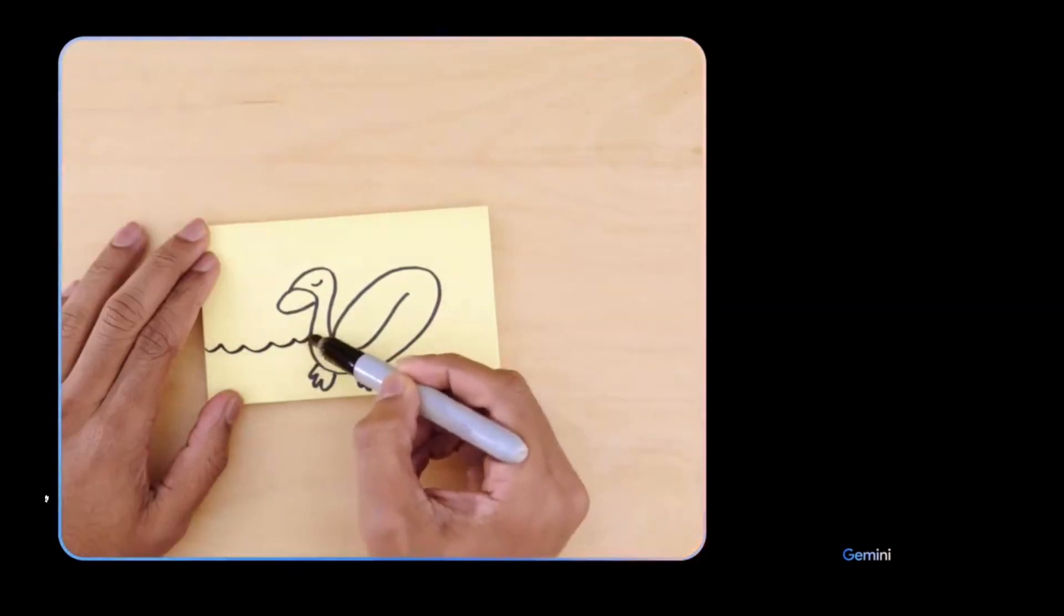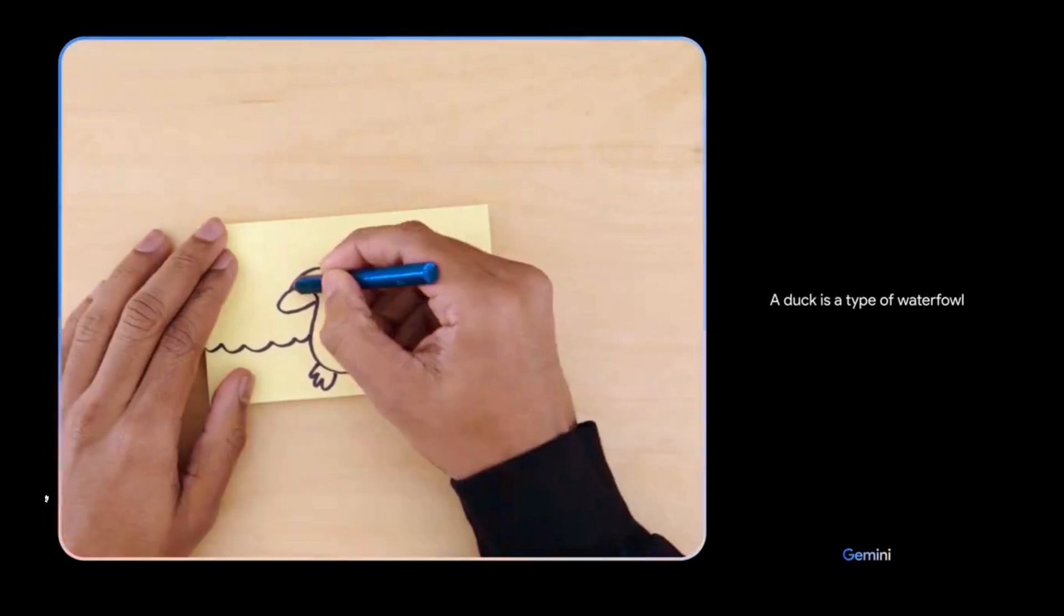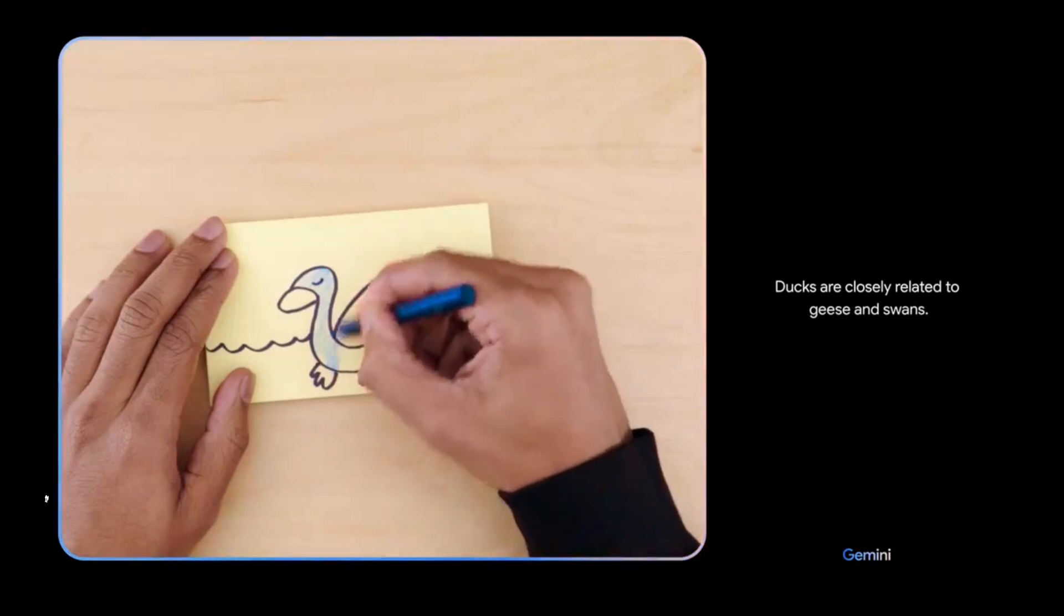What if I add this? The bird is swimming in the water. It has a long neck and beak. It is a duck. Yes. A duck is a type of waterfowl in the family Anatidae. Ducks are closely related to geese and swans.